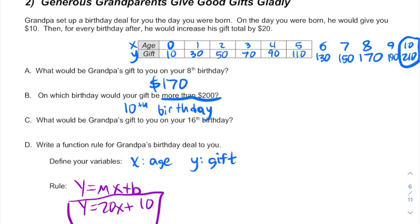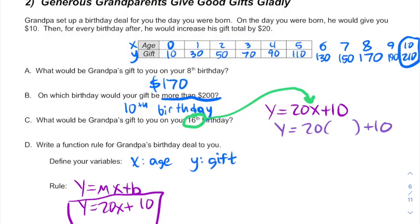Now that I have this equation, I can use this to figure out the sixteenth birthday. Since age is our x and sixteen is the age we're interested in, we're going to plug sixteen in for x. And we get twenty times sixteen plus ten, which is three hundred and twenty plus ten, or three hundred and thirty dollars.